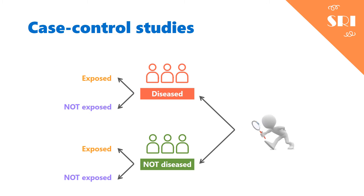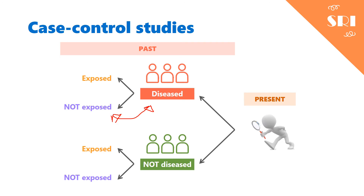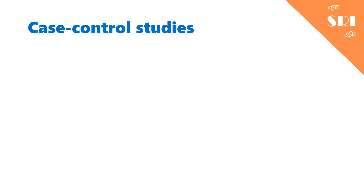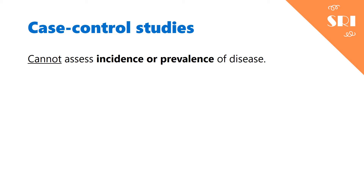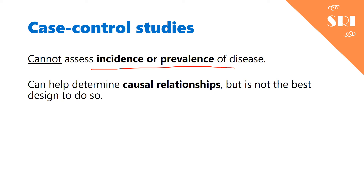We call this a retrospective study because we live in the present, but everything that happened to these patients — whether they have the disease or not, whether they smoked or not — all happened in the past. We're looking at their history to understand how their behavior relates to the disease they got. Case-control studies cannot assess incidence or prevalence because the groups do not represent the general population; we assembled them based on disease status. They can help determine causal relationships, but it's not the best design for that.